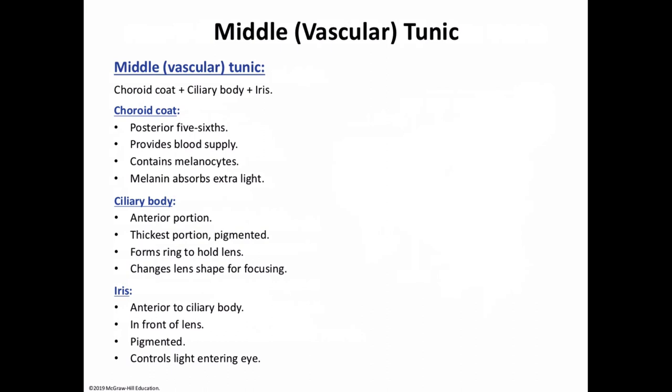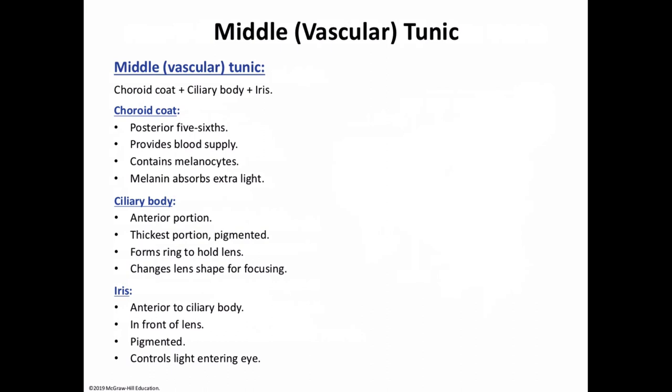Next is the middle vascular layer, which has vascular tissues. It includes the choroid, ciliary body, and iris. The choroid is a blood vessel-rich, dark brown membrane forming the posterior five-sixths of the vascular layer. Its blood vessels nourish all eye layers. The brown pigment produced by melanocytes absorbs light, preventing it from scattering and reflecting within the eye. The choroid has a posterior opening where the optic nerve leaves the eye.